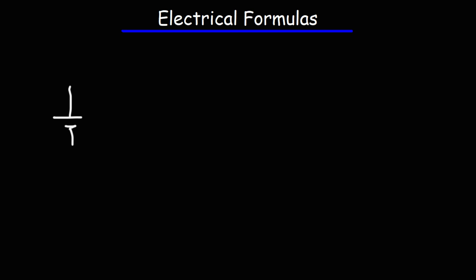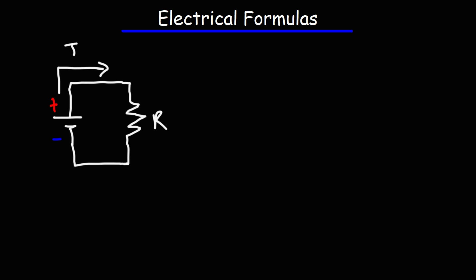So let's draw a simple circuit, one with a battery and a resistor. Here is the positive terminal of the battery and this is the negative terminal. We're going to have a current flowing from the positive terminal to the negative terminal of the battery, and of course, that is conventional current. We know that electron flow flows in the opposite direction.